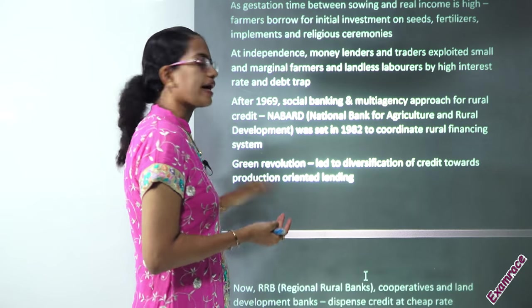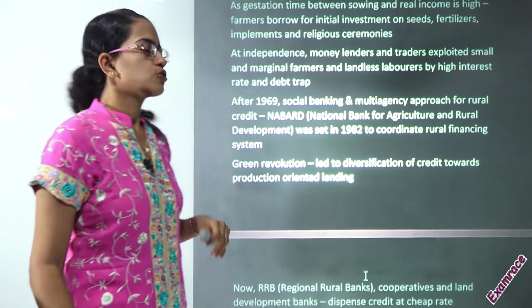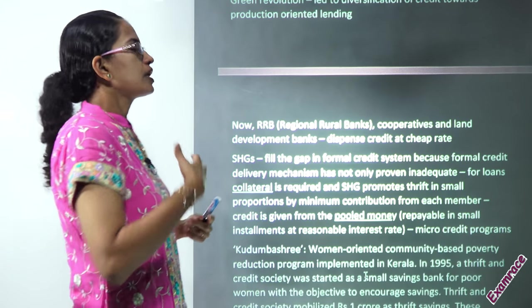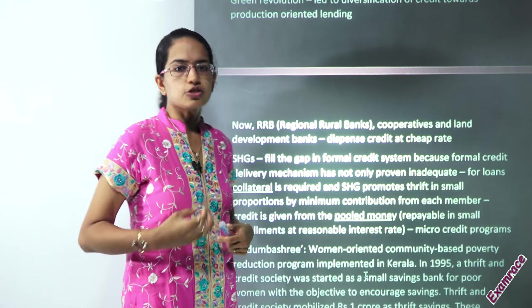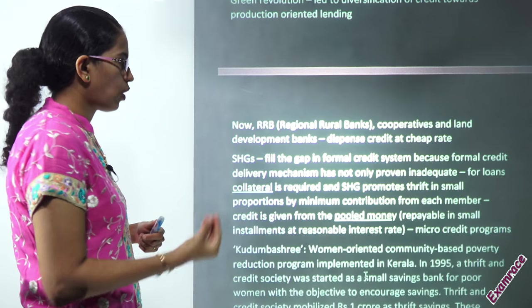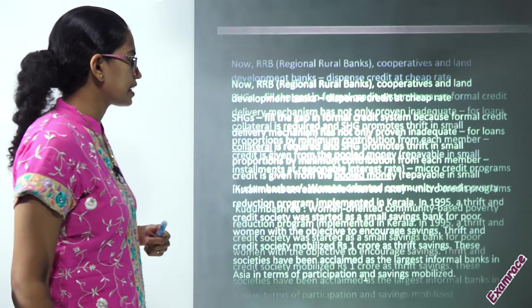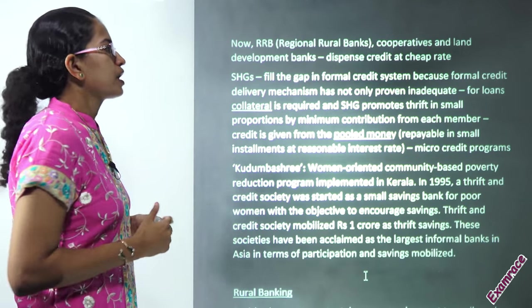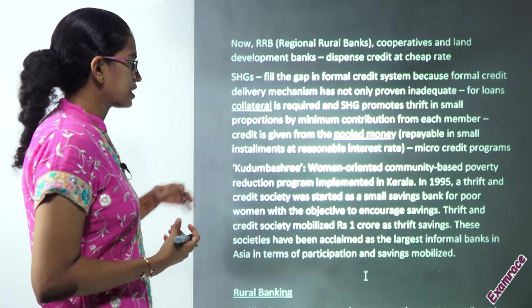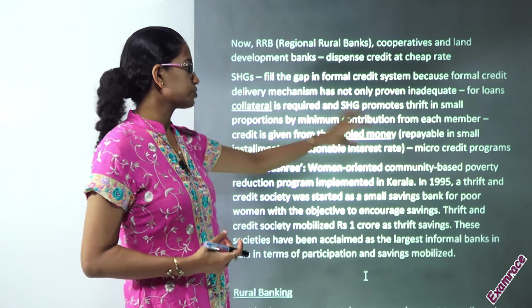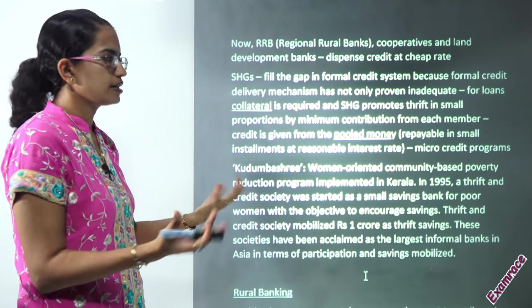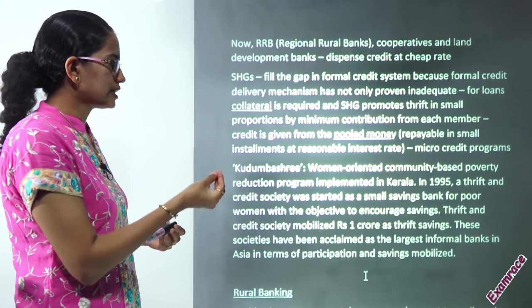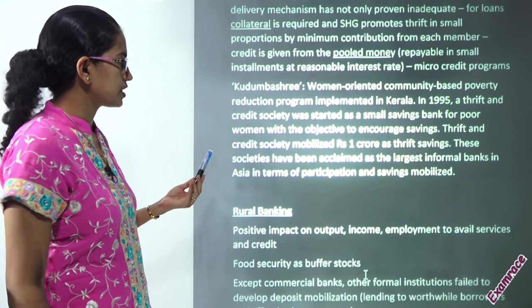Now we have the Evergreen Revolution that's underway — that's the kind of change taking place. In the rural areas, we have the RRBs or Regional Rural Banks, cooperatives, and Land Development Banks that are dispensing credit at a cheaper rate. Self-help groups work as collateral — they have pooled money that is repayable in small installments when required.